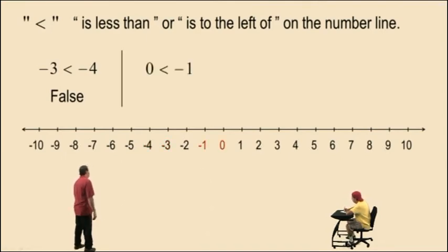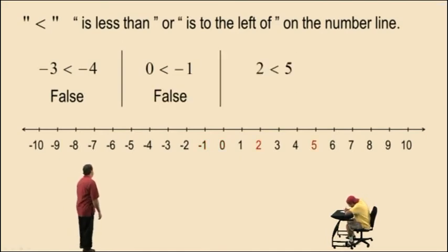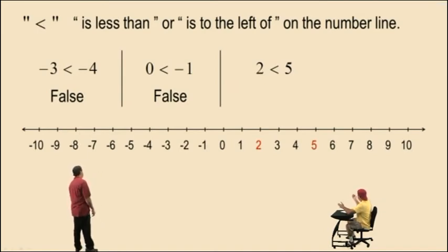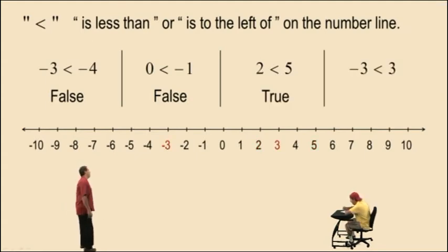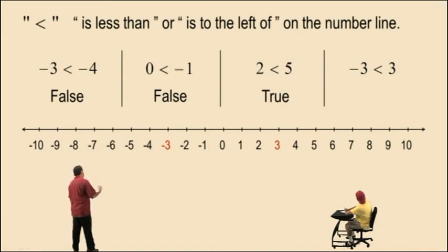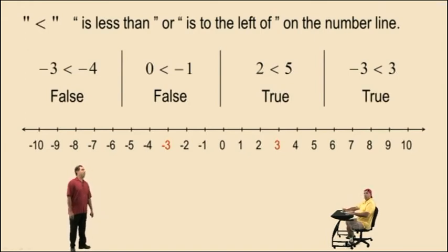Okay Charlie, is 0 less than negative 1 on the number line? Nope. So that's a false statement. Okay Charlie, is 2 to the left of 5 on the number line? Yep, it is, so that's true. Very good. Now, negative 3 less than 3 — is negative 3 to the left of positive 3 on the number line? Yes, so that is a true statement. Very good.